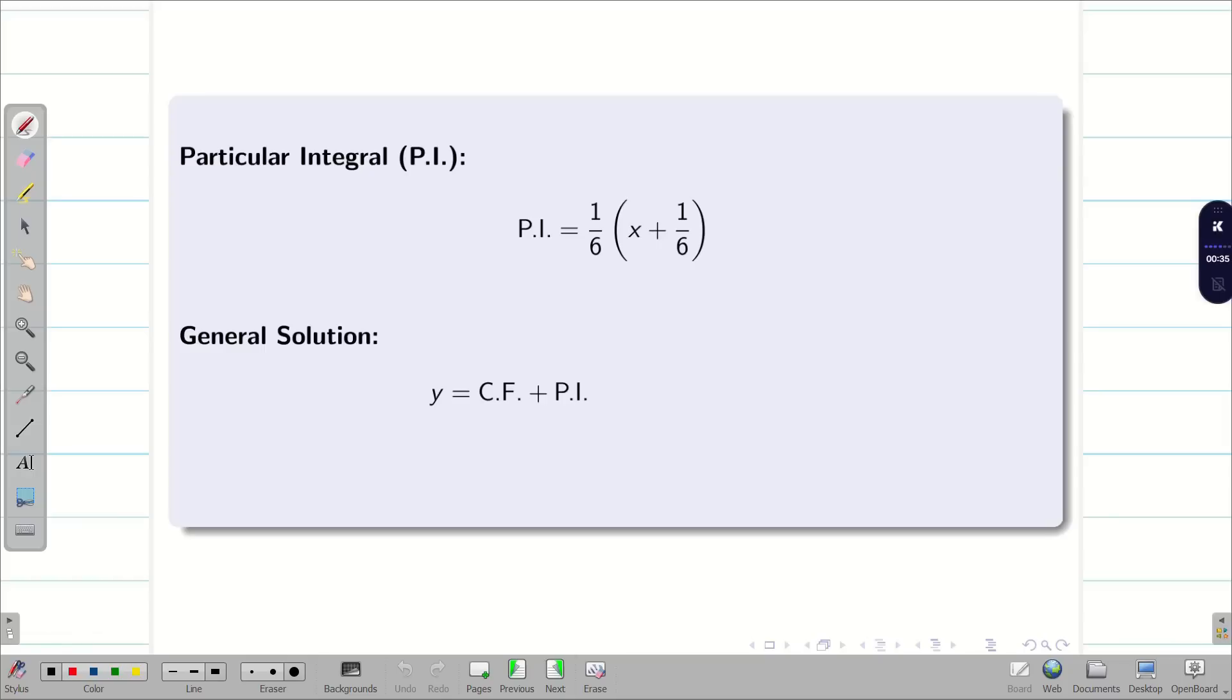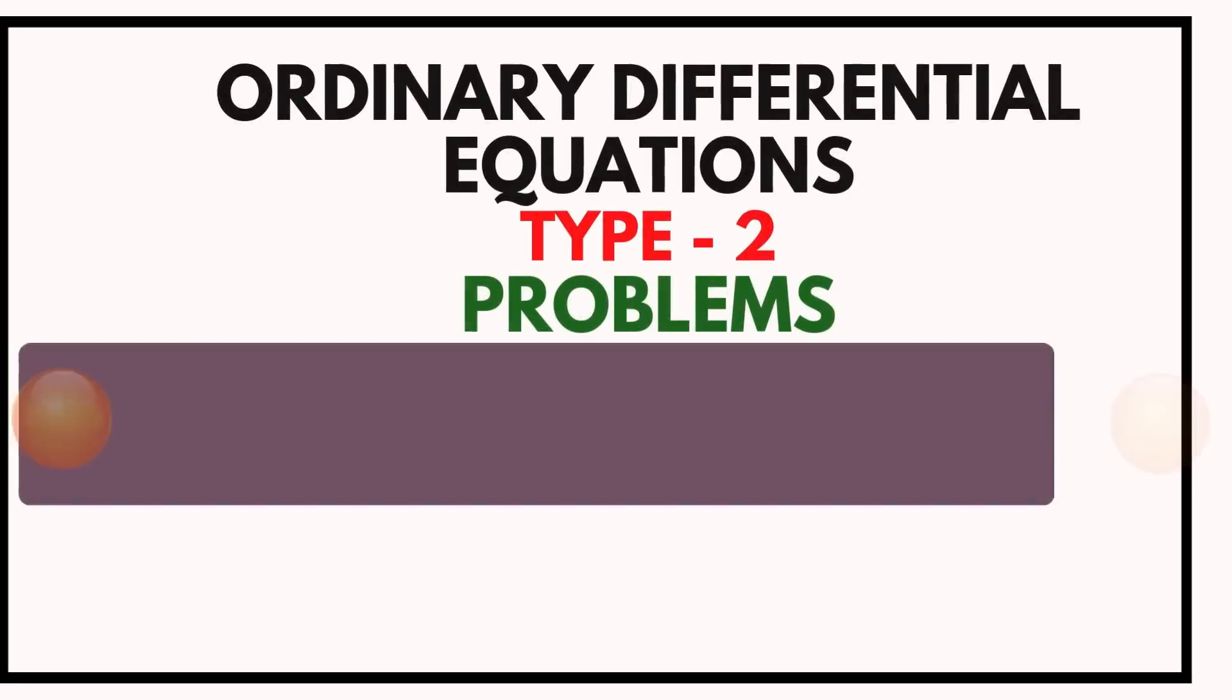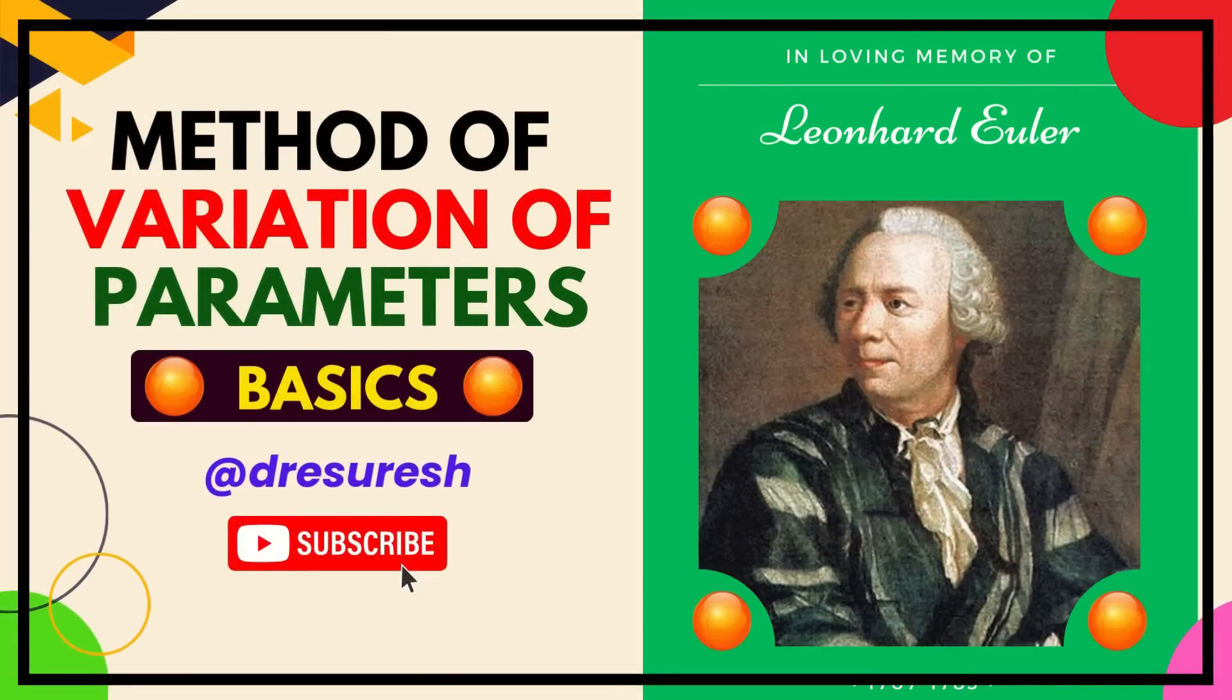Finally, my general solution is y equal to CF plus PI. That is a times e power minus 2x plus b times e power minus 3x plus 1 by 6 into x plus 1 by 6. Subscribe to our channel and share to your friends. See you in the next video. Bye bye!